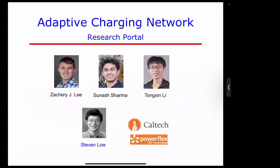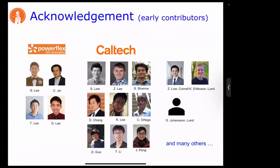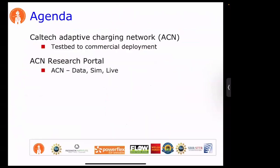The second part concerns the Adaptive Charging Network (ACN) project at Caltech, work led by my former PhD student Zach Lee, Sonas Sharma (now doing a PhD at Berkeley with Duncan), and current PhD student Thompson Lee, along with many contributors over the years, including the engineering team and founders at the Caltech startup PowerFlex.